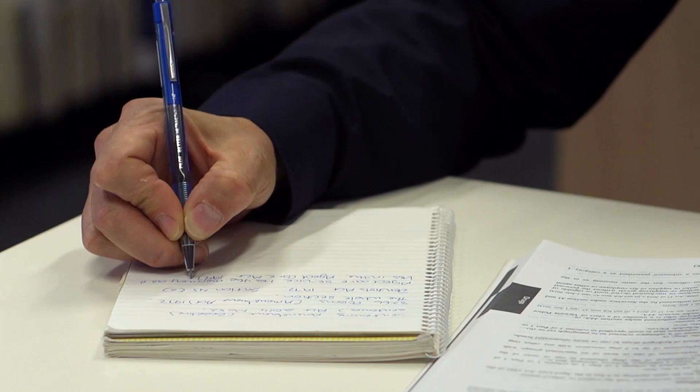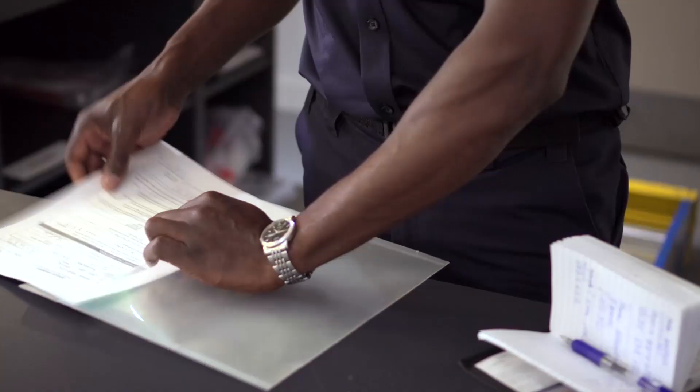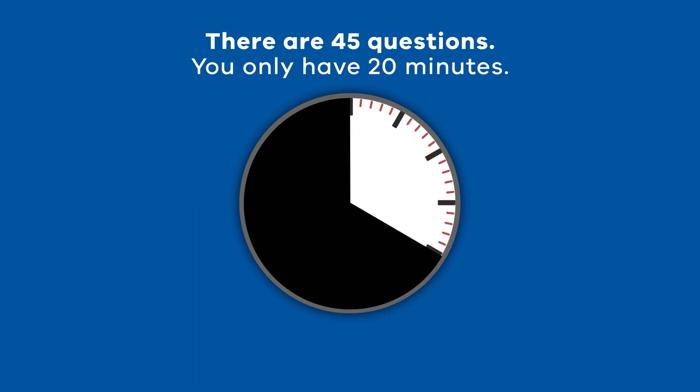In policing, reasoning skills are important because they help you to solve problems, see relationships, evaluate information, and make connections between situations and events. There are 45 questions in this section of the exam and you only have 20 minutes to complete them, so you will need to work quickly. The questions are multiple choice and you will answer them on a computer.